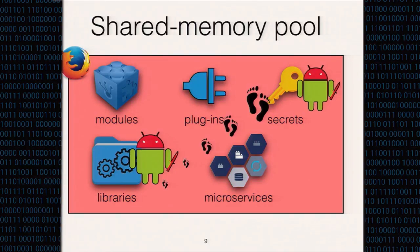It takes only one component to be compromised to exploit the entire program. This problem is due to the intrinsically shared single process address space and the lack of intraprocess isolation.